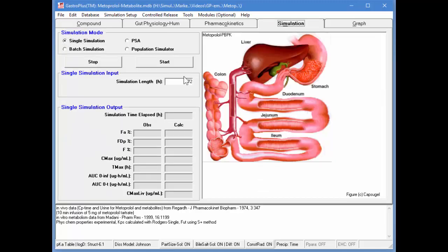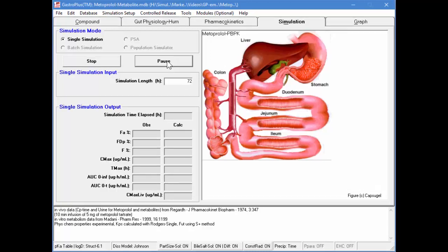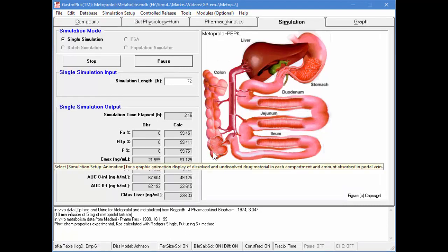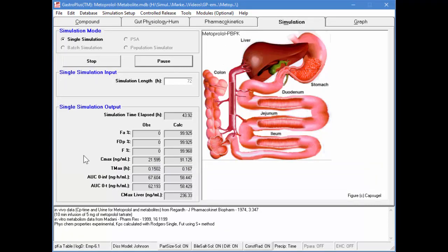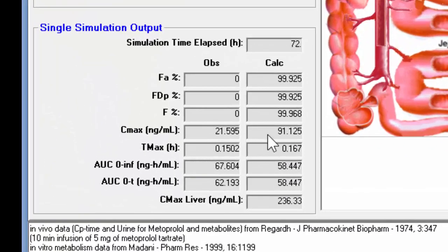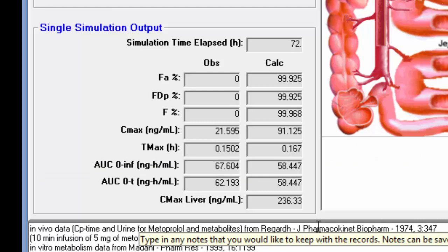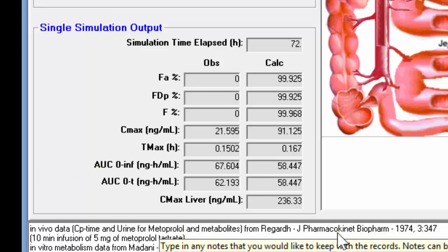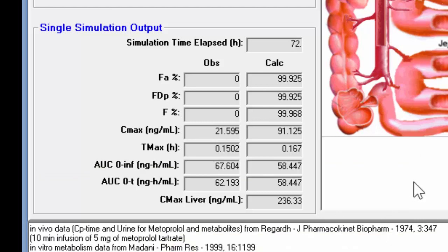I'll go into the Simulation tab. I've already defined this as a 72-hour simulation. I simply click on the Start button, and the simulation starts. It finishes fairly quickly. The CMAX is a little bit off - it's a little bit high on the CMAX of the parent compound. TMAX looks fine, and the area under the curve looks pretty good compared to experimental results.